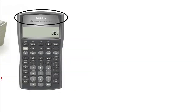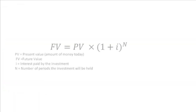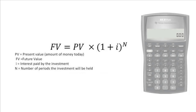You just have to remember one formula to solve most of the time-value-of-money problems: future value equals present value times 1 plus i to the power n. You can locate each of the variables of this formula in a financial calculator.